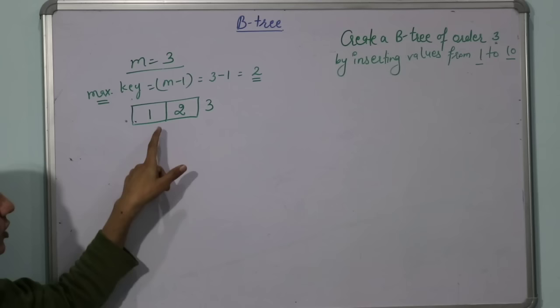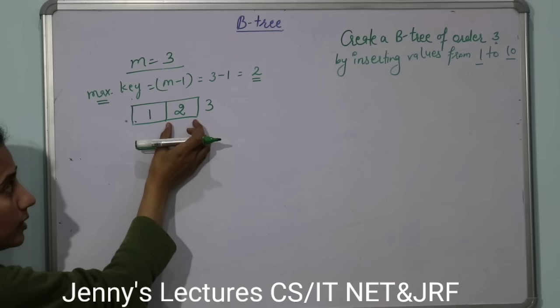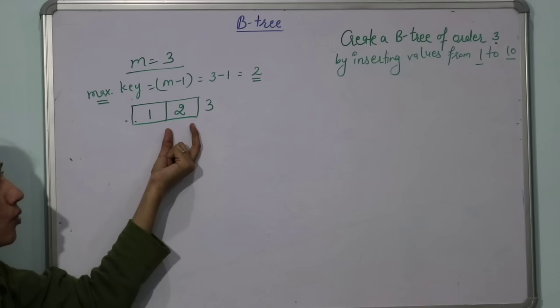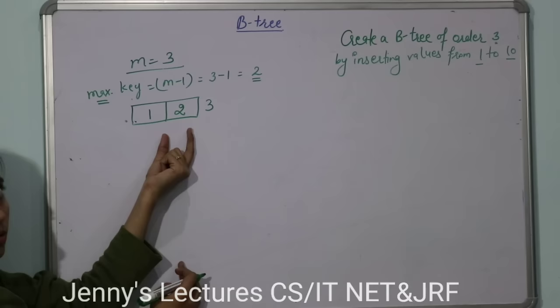But maximum keys can be 2, so that is overflow condition. Now you have to split it. See, always when a node splits, the median part or middle element is calculated. And that middle element would go one level up from this node. Not down, because the B-tree always grows upwards, because leaf nodes are always at the same level.